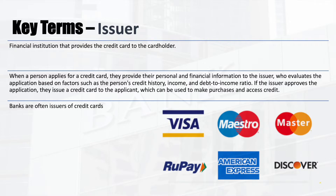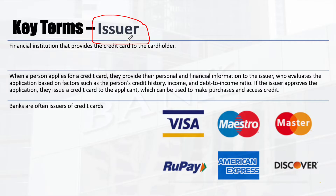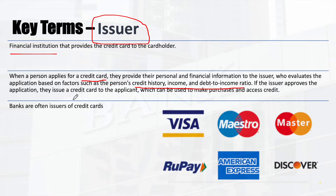Before we start, let's see some key terms useful for understanding the flows later. The issuer is the bank which issues the credit card or debit card. Specifically for a credit card, when you apply, the financial institution checks your credit history, income, and debt-to-income ratio. Based on that profile, they approve a specific credit limit and either issue or deny a credit card.